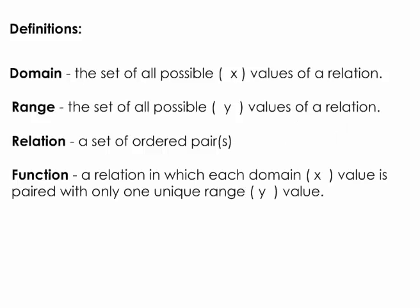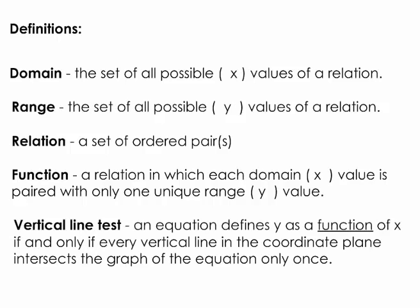Now, function. A function is a specific kind of relation in which each domain value is only paired with one unique range value or y value. The important piece is there is only one domain value associated with each range value. To test if something is a function, remember the vertical line test. An equation defines y as a function of x if and only if every vertical line in the coordinate plane intersects the graph only one time.